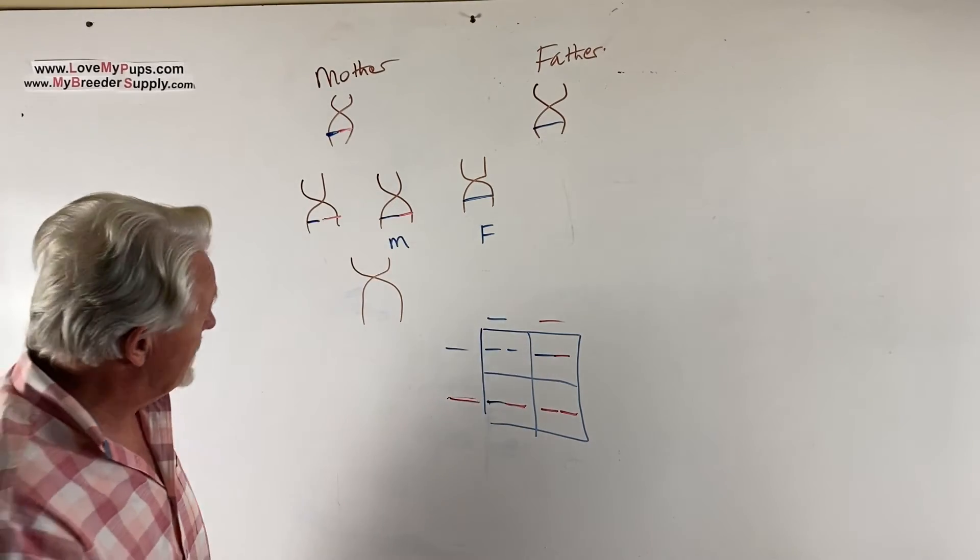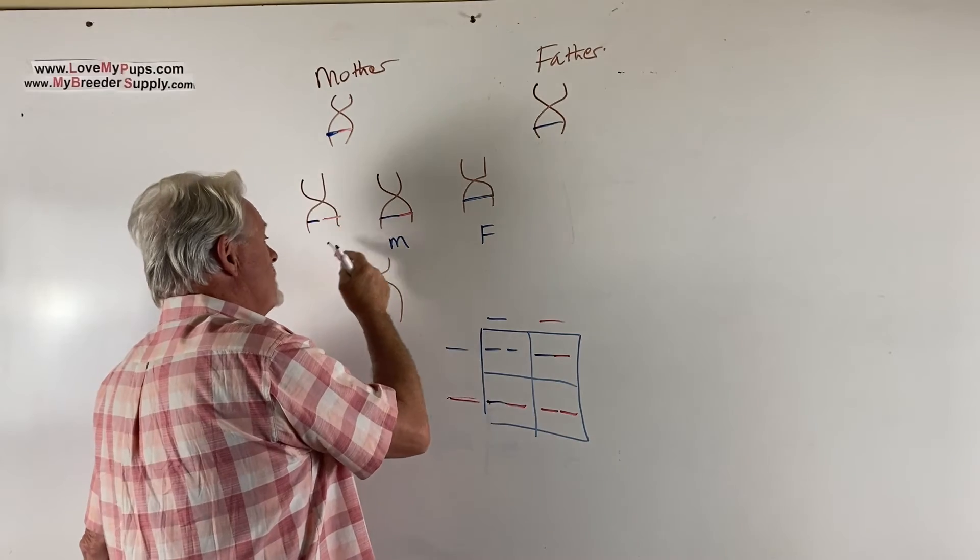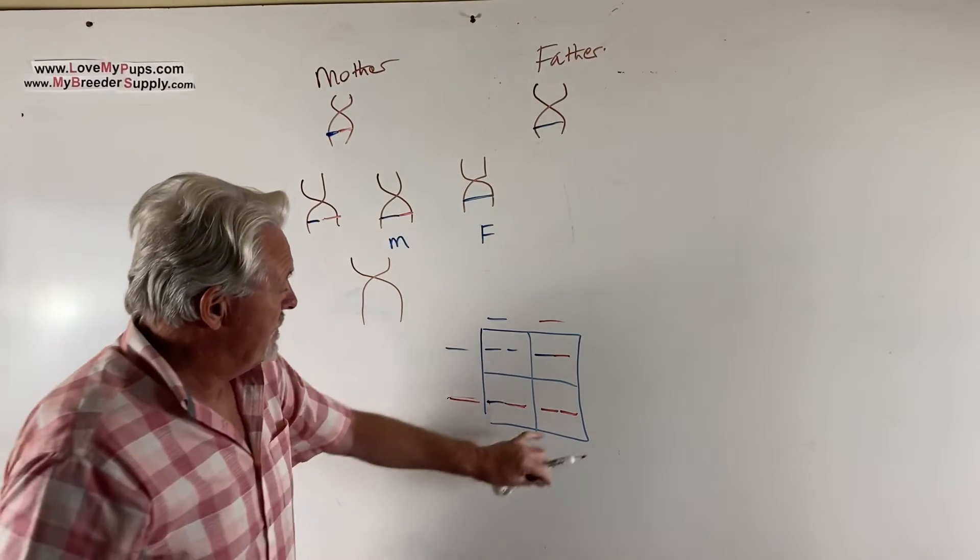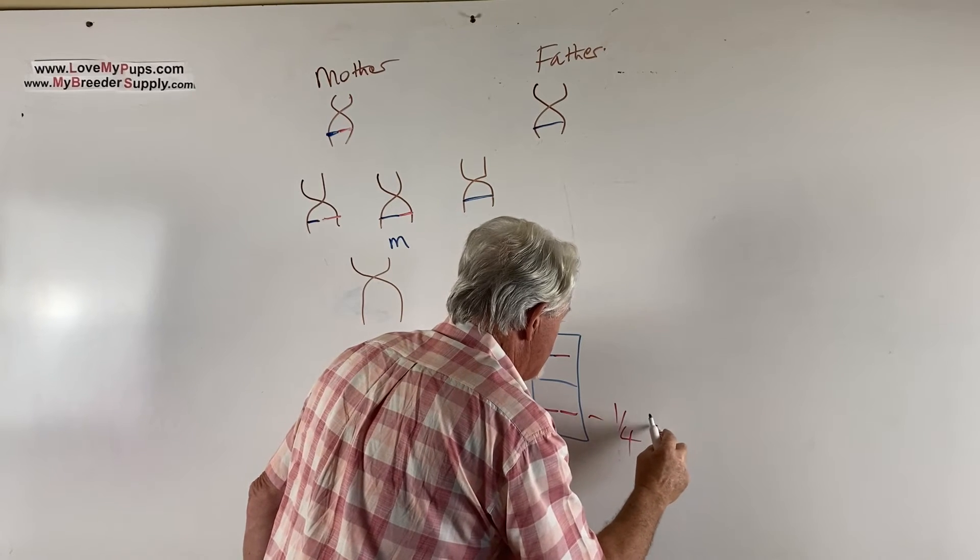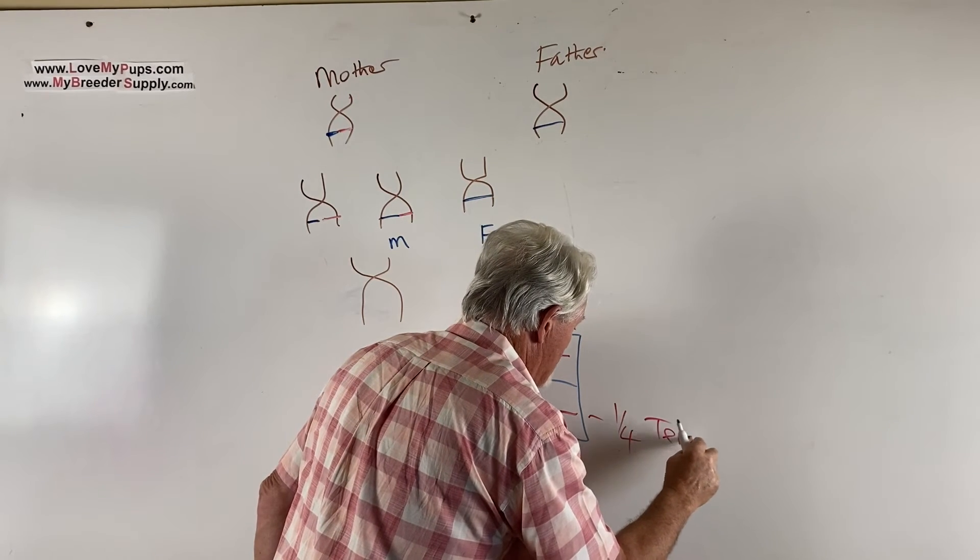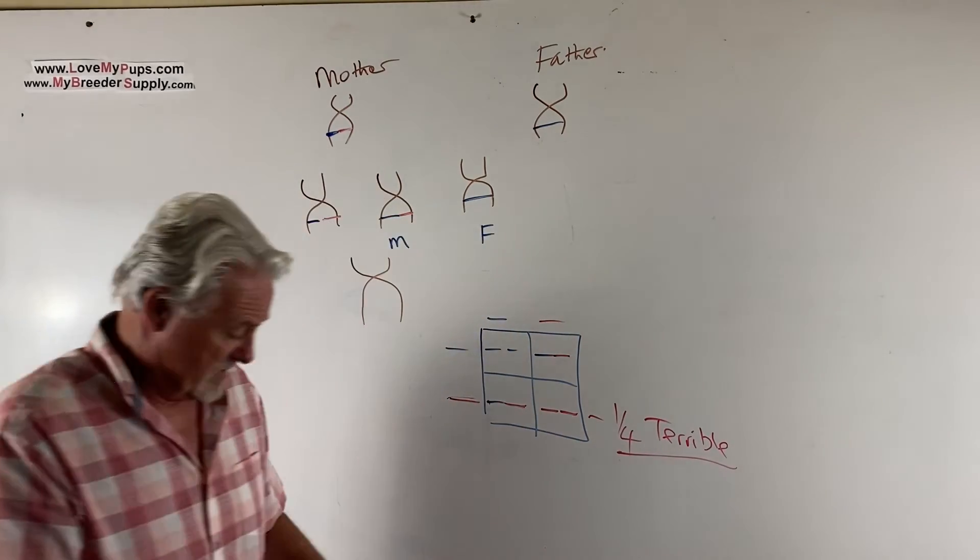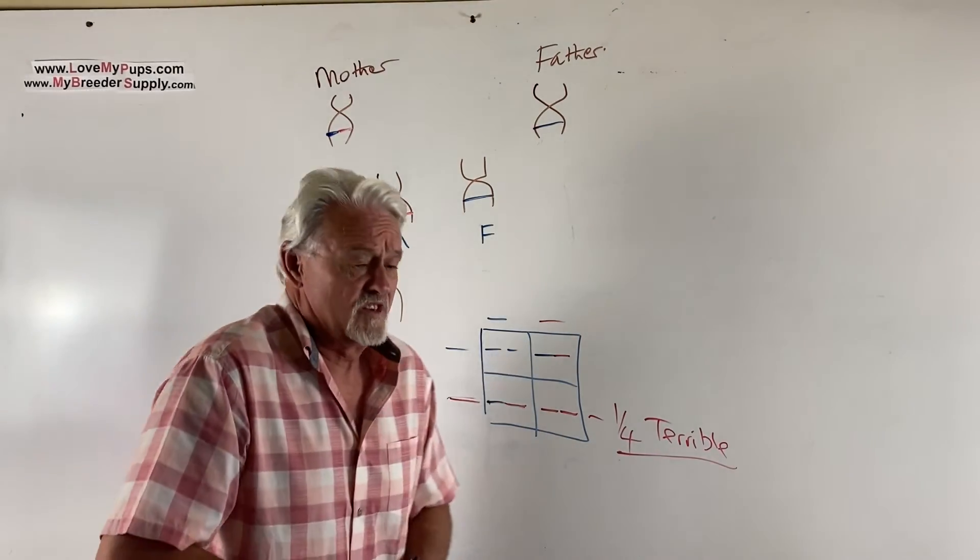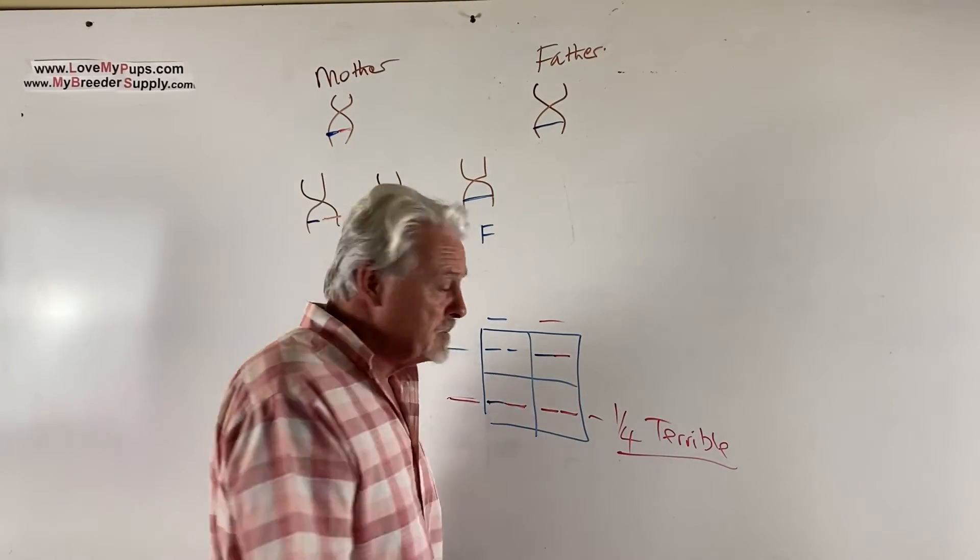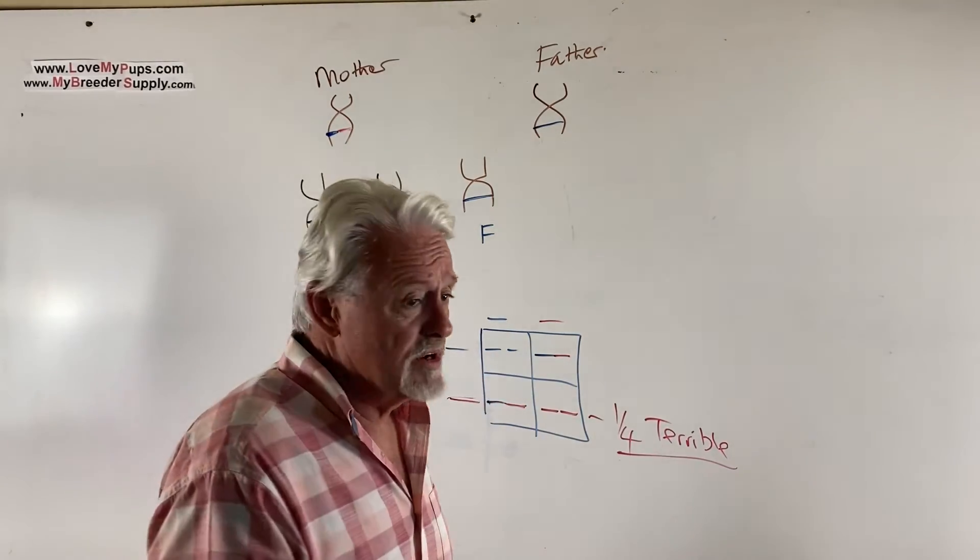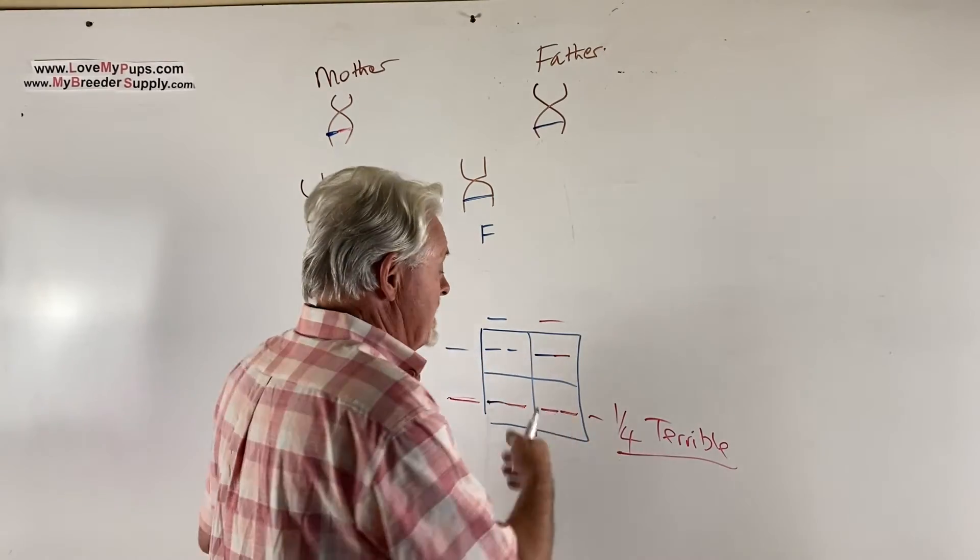And here's the problem. There it is right there. One quarter of the offspring, unfortunately, get a copy of it from the mother and a copy of it from the mother's son. And those ones there, one quarter, have something terrible that's going to happen. Now, how bad is terrible? It might be that they've got an extra eye, or they're missing an eye, or they're deaf, or they're blind, or they don't make it past three months old, or they're born dead. I don't know what terrible is, but terrible can be terrible.